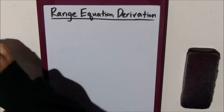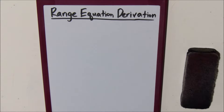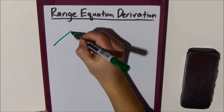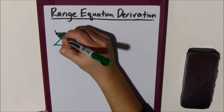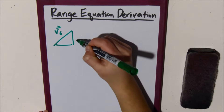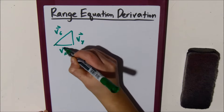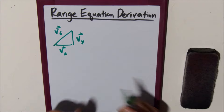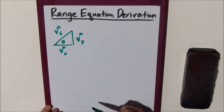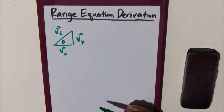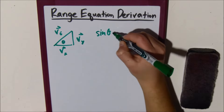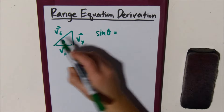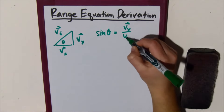The first thing we want to look at is we want to break down initial velocity into its x and y components. So here's our triangle, here's our v initial, here's our v y, and here's our v x. We can solve for v y using sine and v x using cosine. Sine of theta equals opposite over hypotenuse, so v y over v i.